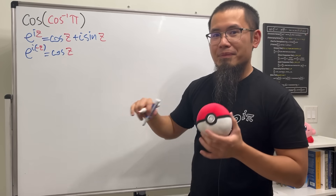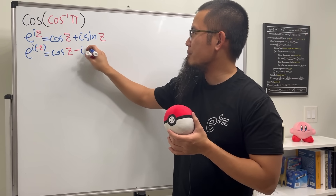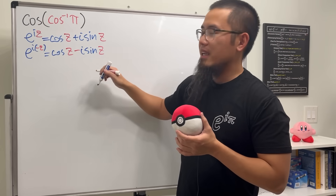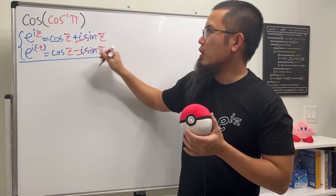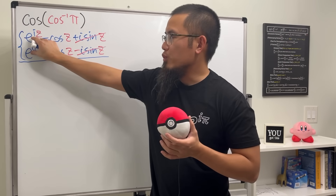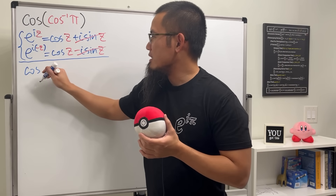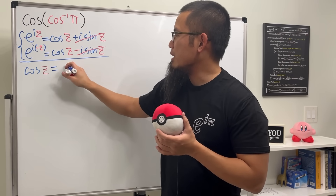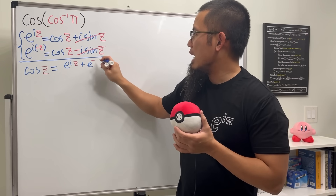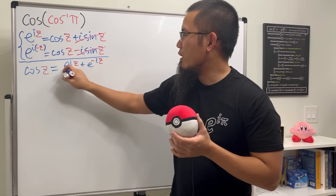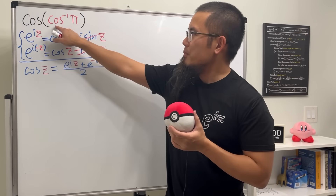When we plug negative z into sine — sine is odd in the complex world — we put a negative on the outside and we have minus i sine z. Looking at these two equations, we add them up because this way the sine terms cancel, and we get two cosine z equal to the sum. Then we divide both sides by two. So ladies and gentlemen, cosine z is equal to e to the iz plus e to the negative iz, all over two. That is the complex definition of cosine.